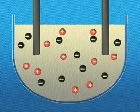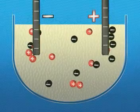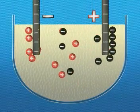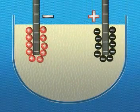Once the power supply is switched on, the lead ions are attracted to the negative electrode. The bromide ions are attracted to the positive electrode.